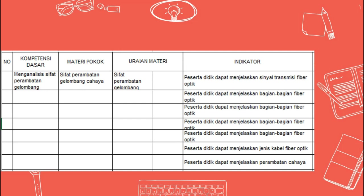Di dalam sifat perambatan gelombang cahaya, untuk materi pokoknya dan uraian materinya yaitu sifat perambatan gelombang cahaya. Untuk indikatornya, peserta didik dapat menjelaskan sinyal transmisi dari fiberoptik, kemudian dapat menjelaskan bagian-bagian dari fiberoptik.